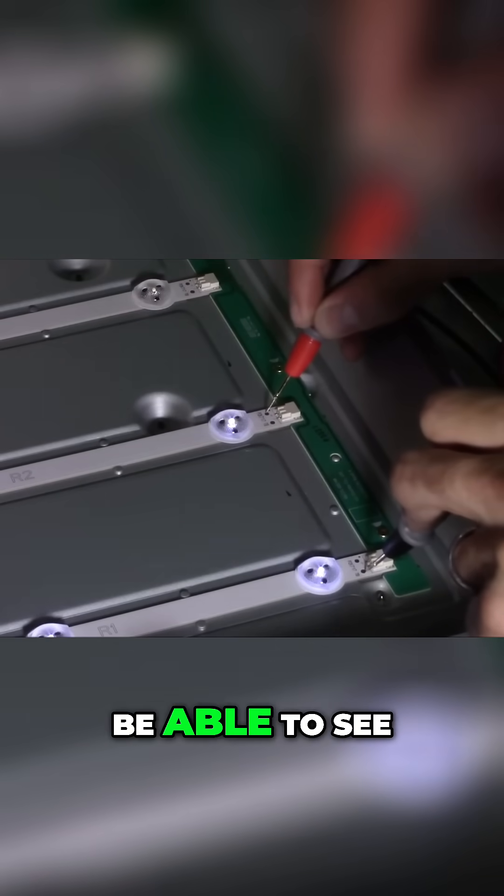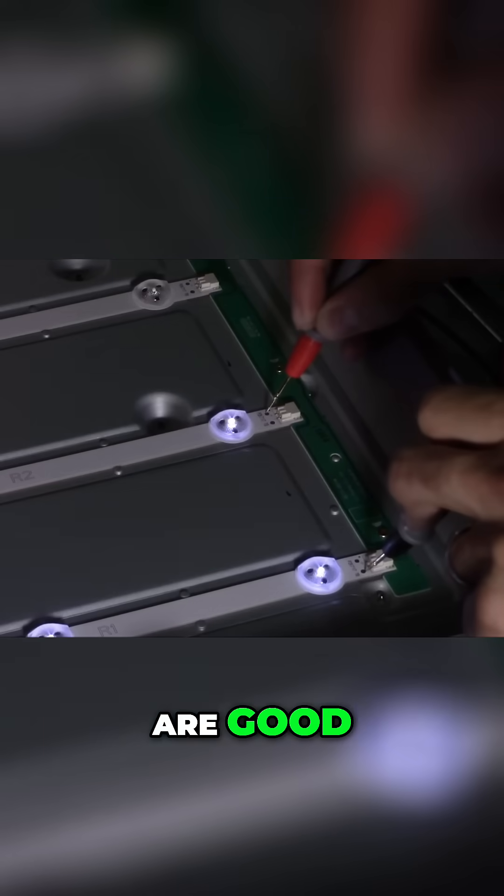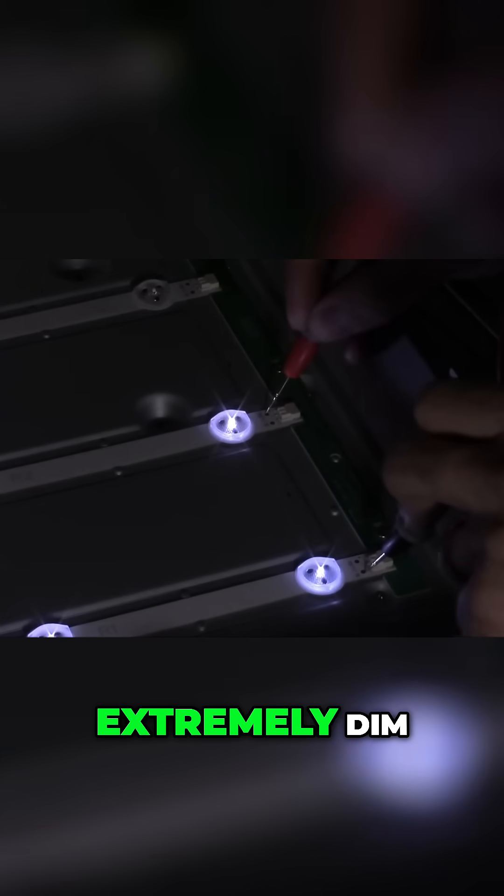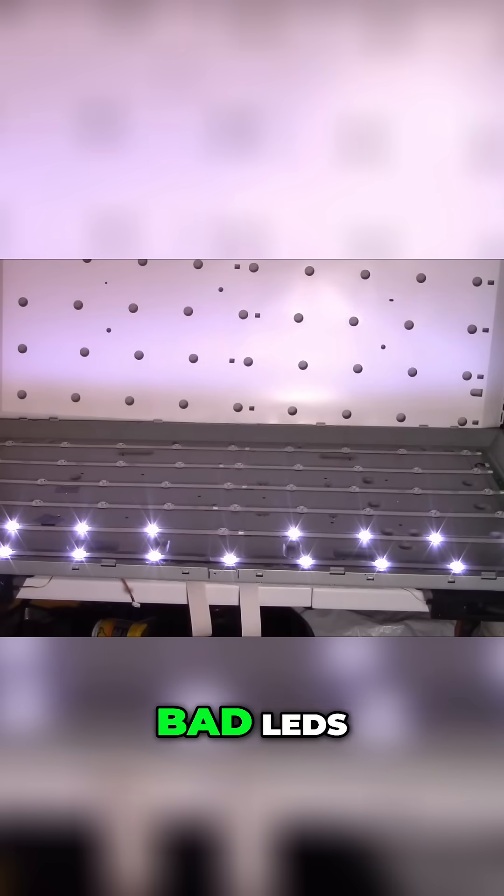And then you should be able to see all the LEDs that are good, that will light up, and all the bad ones will obviously not light up or be extremely dim. So I see two bad LEDs.